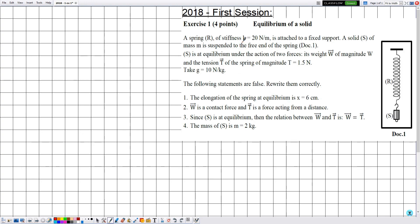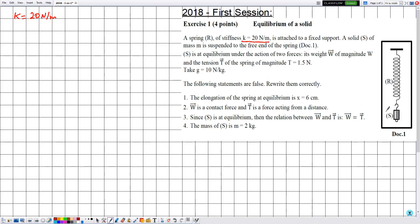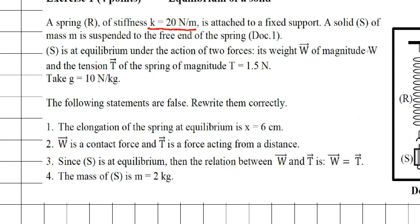A spring R of stiffness k equal to 20 newtons per meter is attached to a fixed support. A solid S of mass m is suspended to the free end of the spring, as shown in document one. Here we can see the spring R and the solid S.